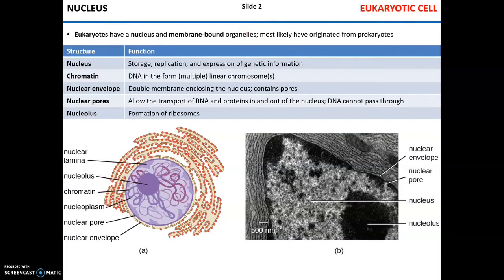First we're going to talk about eukaryotic cells. All eukaryotic cells have a nucleus and membrane-bound organelles. Most likely eukaryotic cells originated from prokaryotes — cells without a nucleus — so prokaryotes remained and eukaryotes branched away.